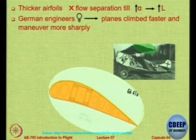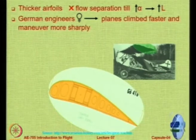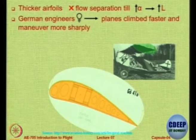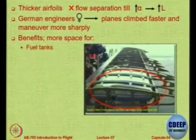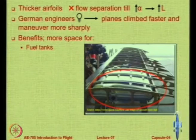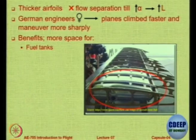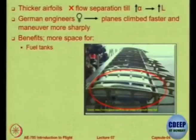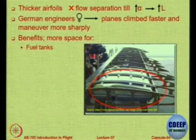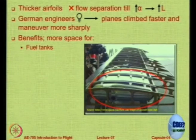One of the captured aircraft during the Second World War was investigated by the Allied forces to find out why it was behaving much better than their aircraft, and they found the reason was a thicker aerofoil. Research on thick aerofoils then began. Also, as mentioned, if you have more thickness you have more space — the wing is where we normally keep the fuel tank. The thicker the wing, the larger the space for the fuel tank, as shown in this picture with a bladder fuel tank enclosed between the front spar and the rear spar. The front spar is typically at around the quarter chord location from the leading edge, and the rear spar is the main anchor for the control surfaces — the ailerons and the flaps.